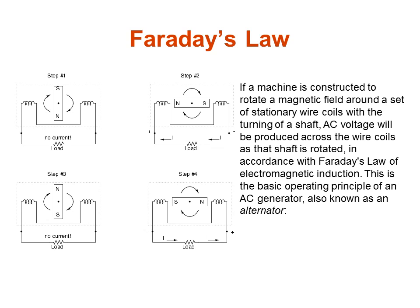If a machine is constructed to rotate a magnetic field with the turning of a shaft, AC voltage will be produced across the wire coils as that shaft is rotated in accordance with this law. This is the basic operating principle of an AC generator, also known as an alternator.